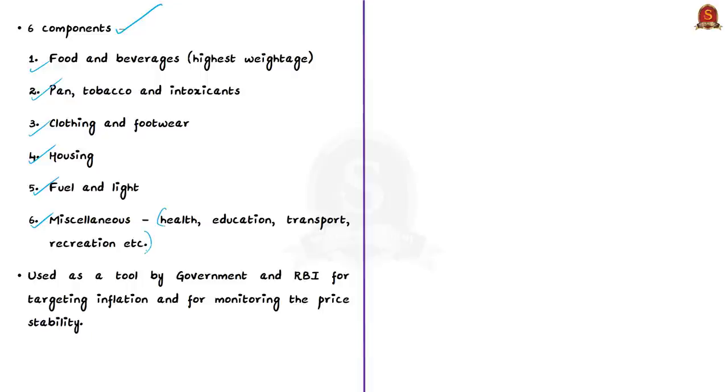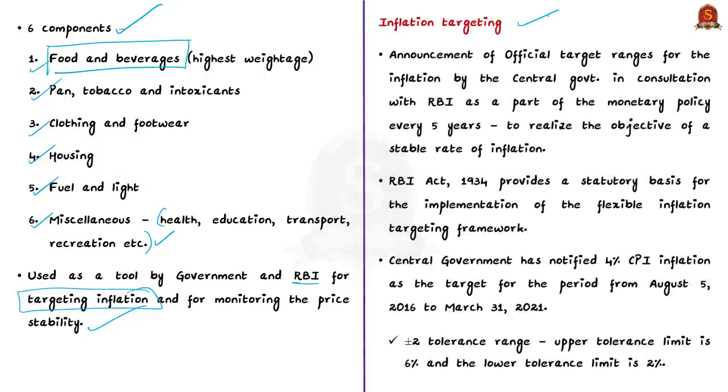CPI is used as a tool by the government and RBI for targeting inflation and for monitoring price stability. Inflation targeting is the announcement of official target ranges for inflation. It is done by the central government in consultation with RBI as part of monetary policy every 5 years to realize the objective of a stable rate of inflation. The RBI Act of 1934 provides a statutory basis for the implementation of flexible inflation targeting framework. Based on this, the central government has notified 4% CPI inflation as the target for the period from August 5, 2016 to March 31, 2021. This target has a plus or minus 2 tolerance range, that is the upper tolerance limit is 6% and the lower tolerance limit is 2%.